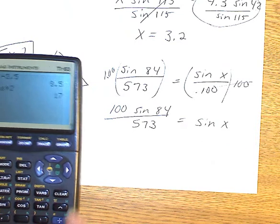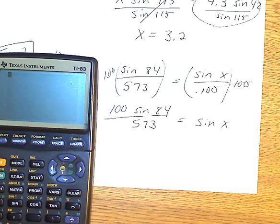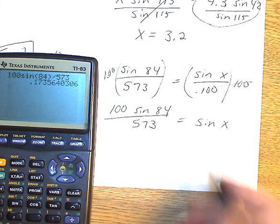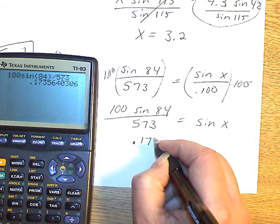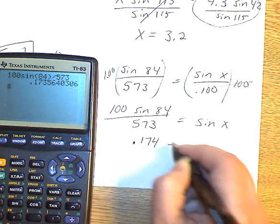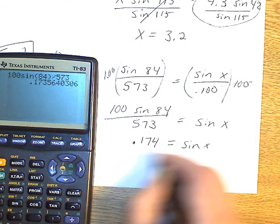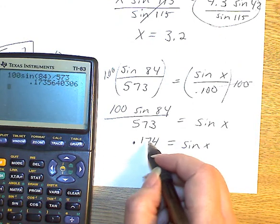So what you could do is 100 sine of 84, and we are dividing that by 573. So I get .1735, approximately that, sine of X. I'm not really rounding, because I'm going to use my answer in the next.